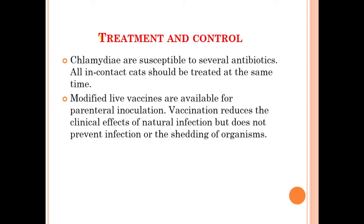Moving on, we will discuss about the treatment and control of feline chlamydiosis. Chlamydia are susceptible to several antibiotics. All in-contact cats should be treated at the same time. Modified live vaccines are available for parenteral inoculation. Vaccination reduces the clinical effects of natural infection but doesn't prevent the infection or the shedding of the organism.